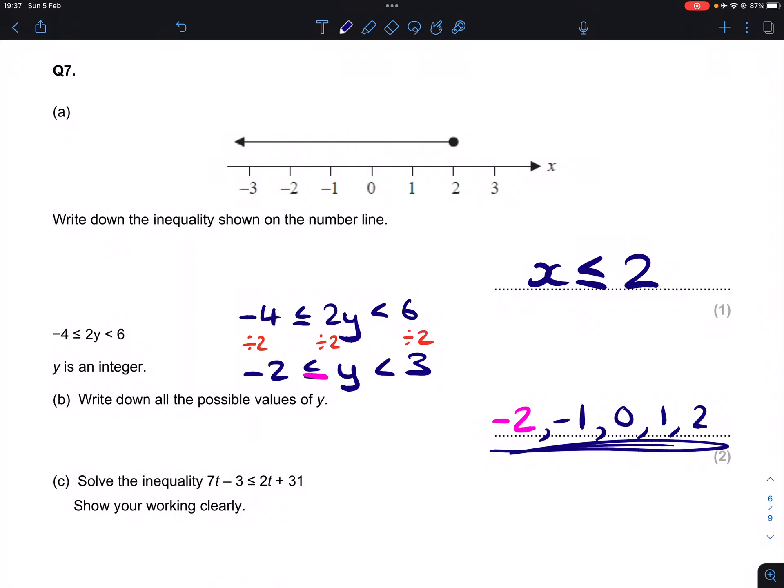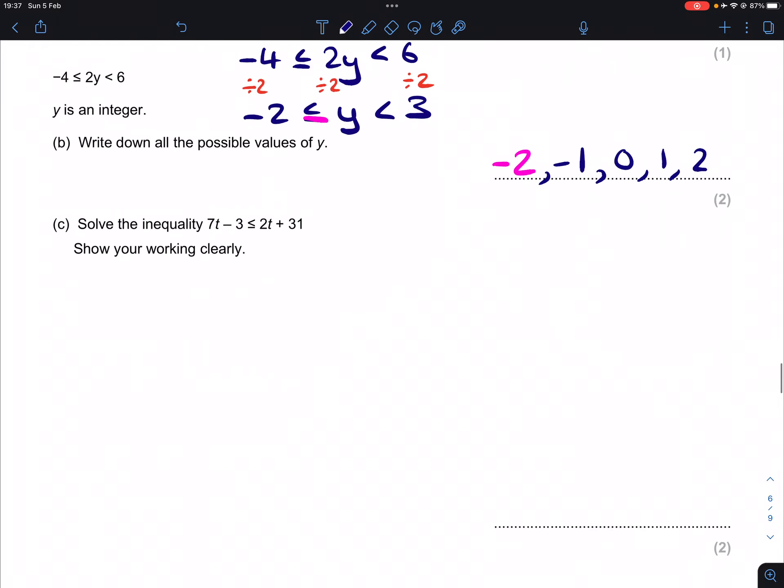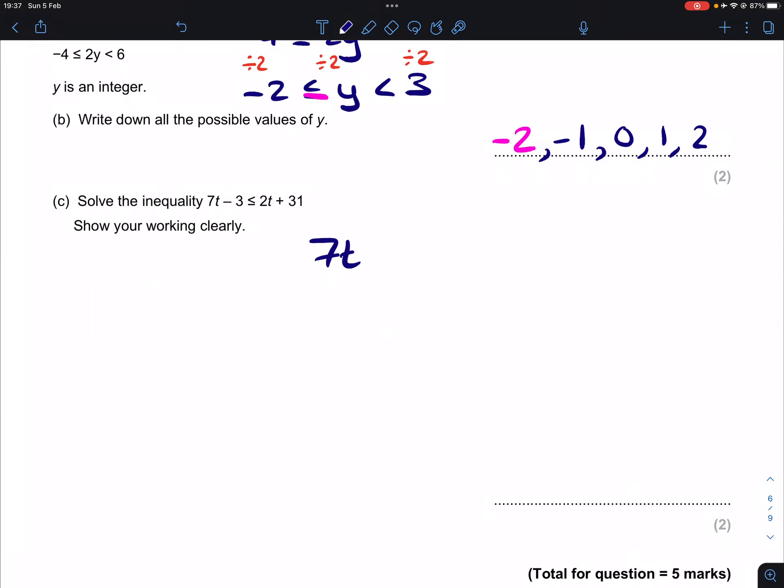Part c: solve the following inequality. It's linear, so we can rearrange it to get all the letters on the same side, get t on its own, just like any linear equation. Just be careful whenever you multiply or divide by a negative number that will change the sign of this.